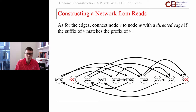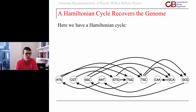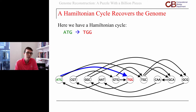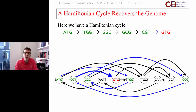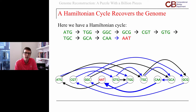We're trying to touch every single one of those nodes because we want to use all our reads. As we walk through this network, we're connecting nodes based on overlap. So I really want to find a walk through the network that touches every node exactly once — and that's a Hamiltonian cycle. Here I'll point out a Hamiltonian cycle: we start at ATG and go over to TGG — they overlap at TG. Then TGG goes to GGC, overlapping in GG, and we keep walking. Eventually we use all the nodes, highlighted in green, getting to GCA, CAA, AAT, and then back to ATG.